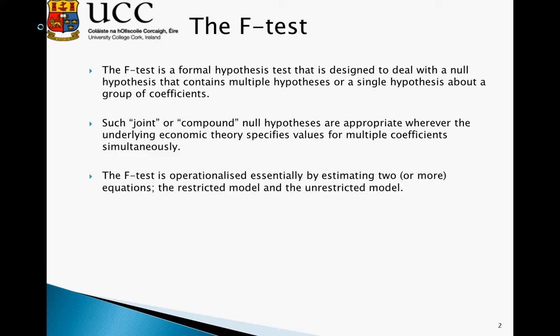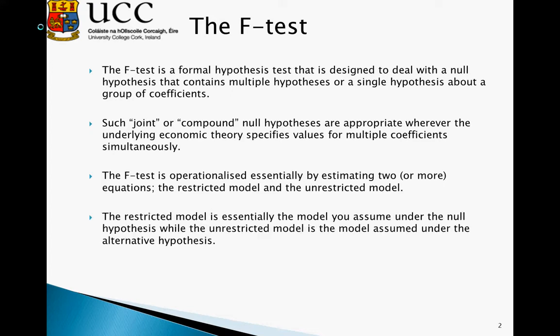The F test is operationalized essentially by estimating two or more equations. We work with a restricted model and an unrestricted model. The restricted model is essentially the model assumed under the null hypothesis and has some restriction imposed on it, while the unrestricted model is the model assumed under the alternative hypothesis.